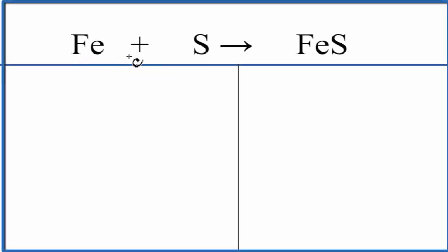In this video, we'll balance the equation Fe plus S gives us FeS. This is iron plus sulfur, and we get iron sulfide.